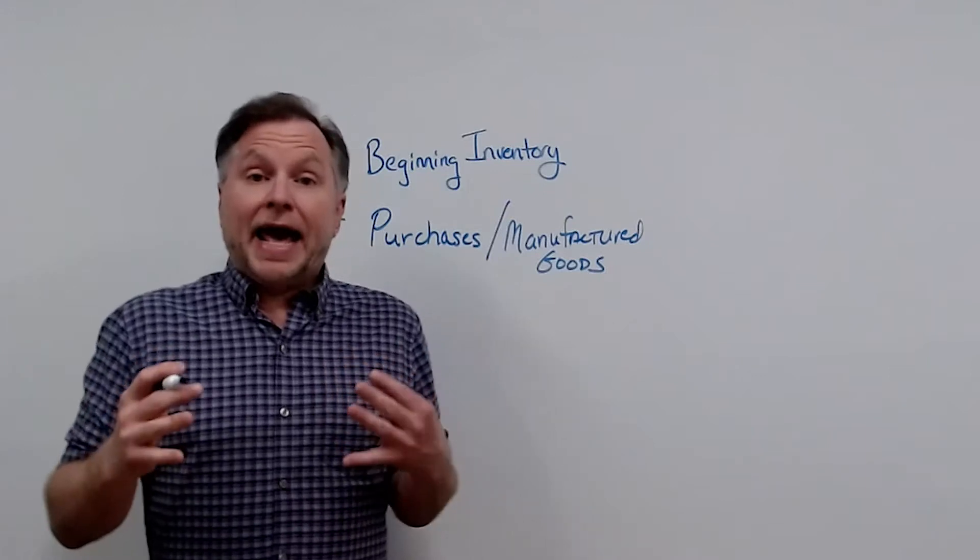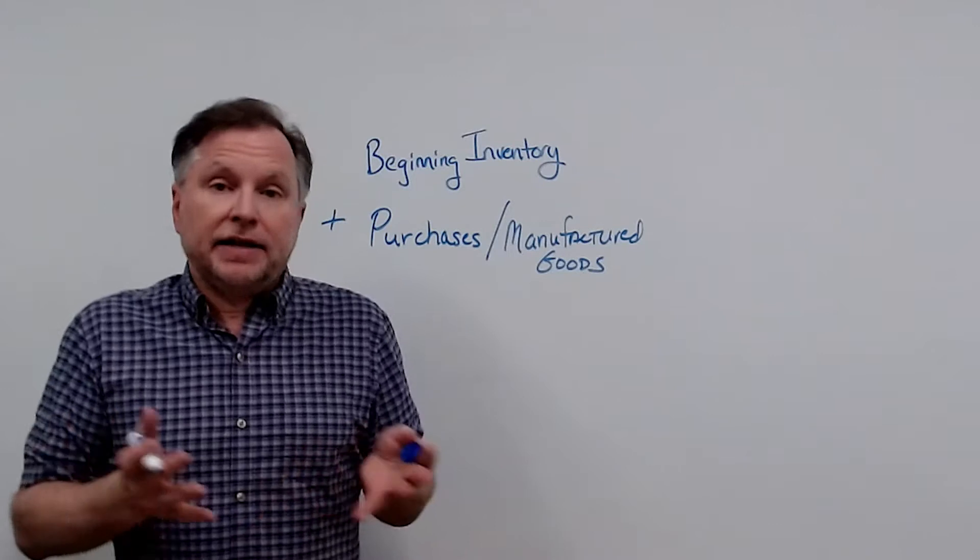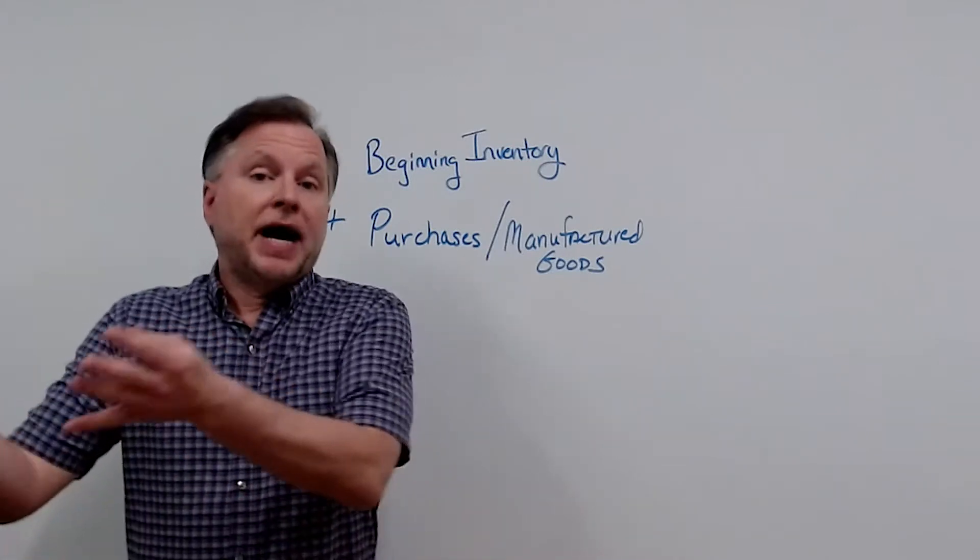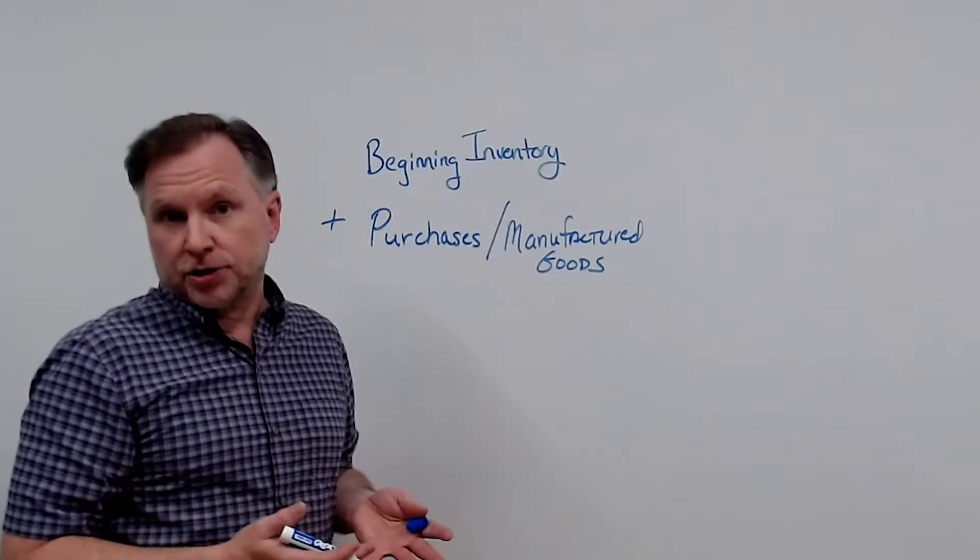Next, we're going to add our purchased or our manufactured goods, depending on what kind of operation we are. If we buy our product to sell, it's purchases. If we make our product, then it's manufactured goods.